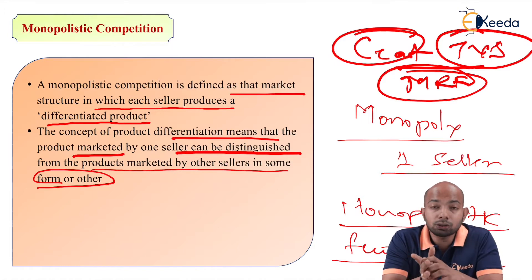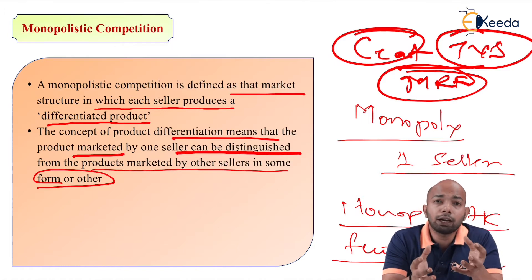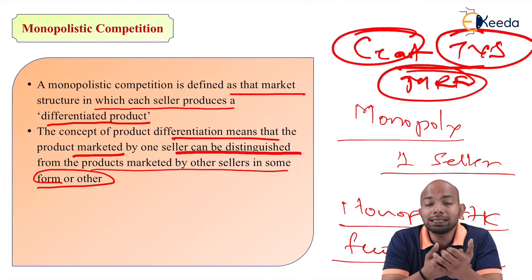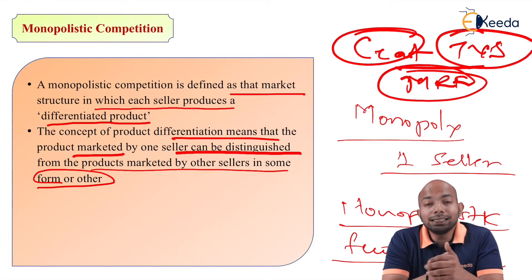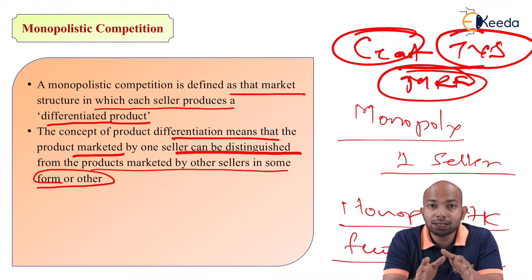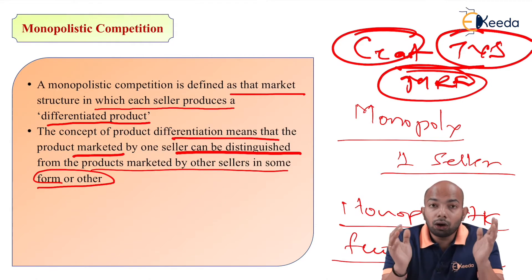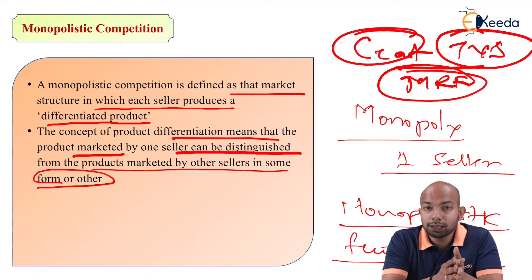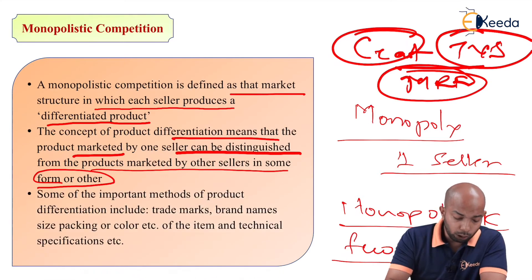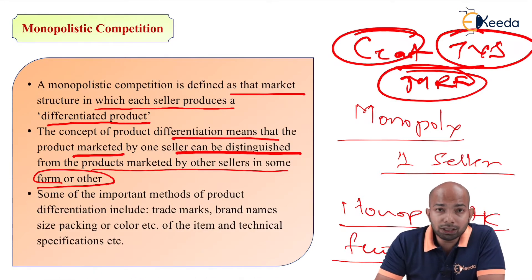Based on these three sellers — a handful as mentioned — all three are selling the same product, tires, but they are differentiated based on the features they have. This whole situation is known as monopolistic competition.